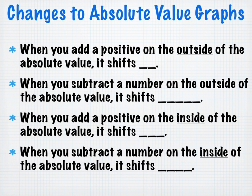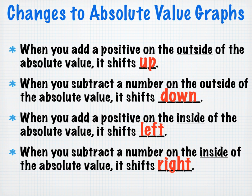Changes to absolute value graphs: adding a positive to the outside shifts the graph up; subtracting from the outside shifts it down. Adding a positive to the inside shifts the graph left; subtracting from the inside shifts it right — the opposite of what you might expect, because the absolute value turns negatives into positives.